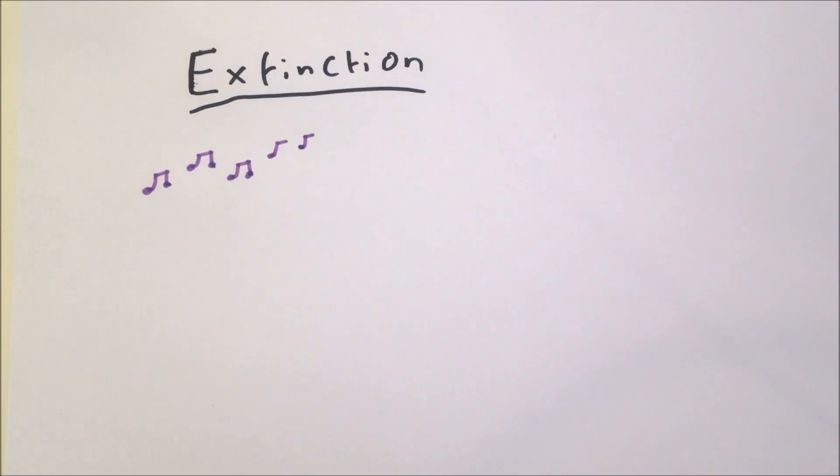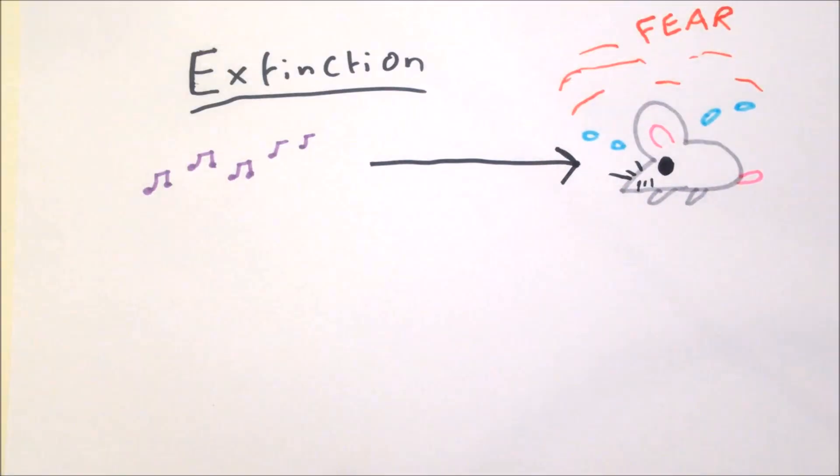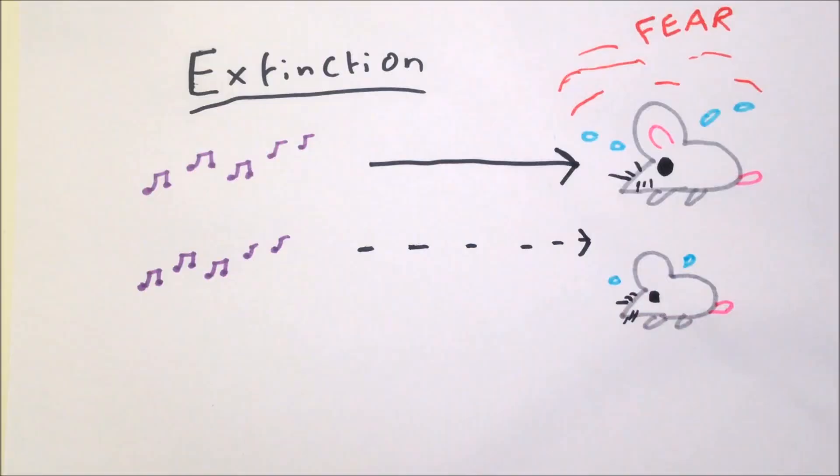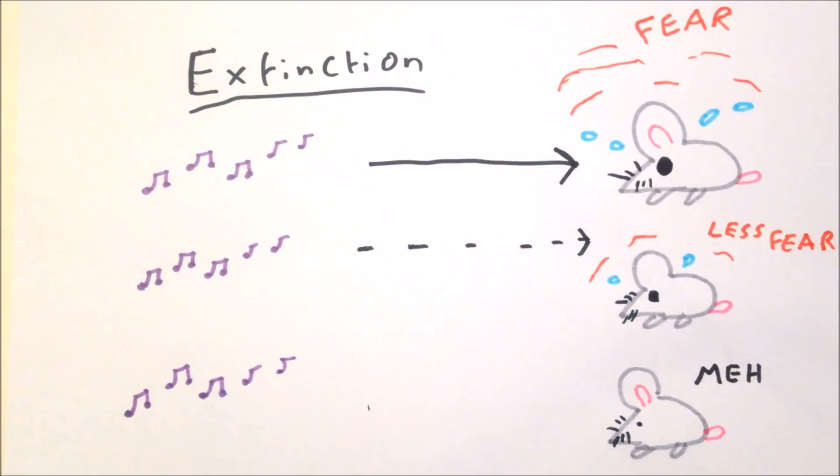Related to fear conditioning is the concept of fear extinction. Extinction occurs when the conditioned stimulus of the tone is presented repeatedly without the unconditioned stimulus of the foot shock. The animal gradually learns that the sound no longer predicts a shock. The association is broken, and the fear behaviour is no longer displayed.